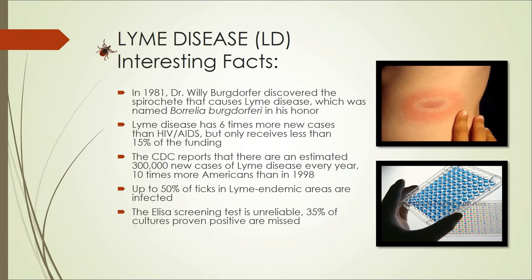In 1981, Dr. Willy Burgdorfer discovered the spirochete that caused Lyme disease, which was named Borrelia burgdorferi in his honor. Lyme disease has six times more new cases than HIV or AIDS, yet it receives less than 15% of comparable funding.